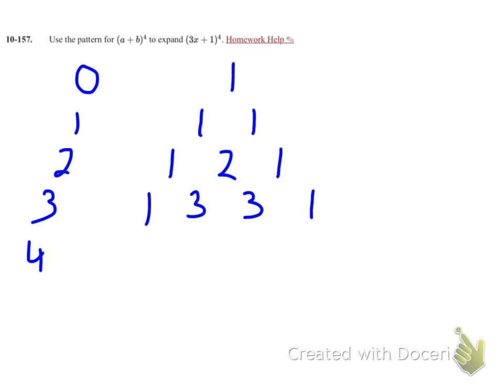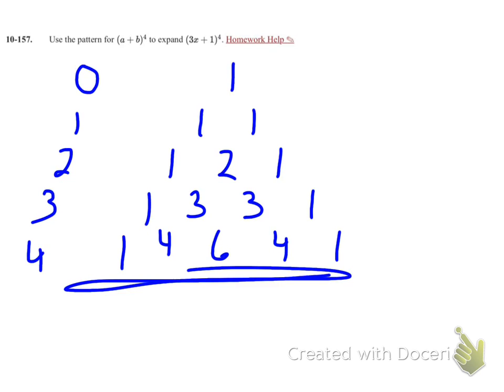And row 4, which is the row I want to look at because I'm using a 4th power, is going to be 1, 4, 6, 4, 1. This is the row that tells me the coefficients, so I don't want the rest of this - I only want that row.